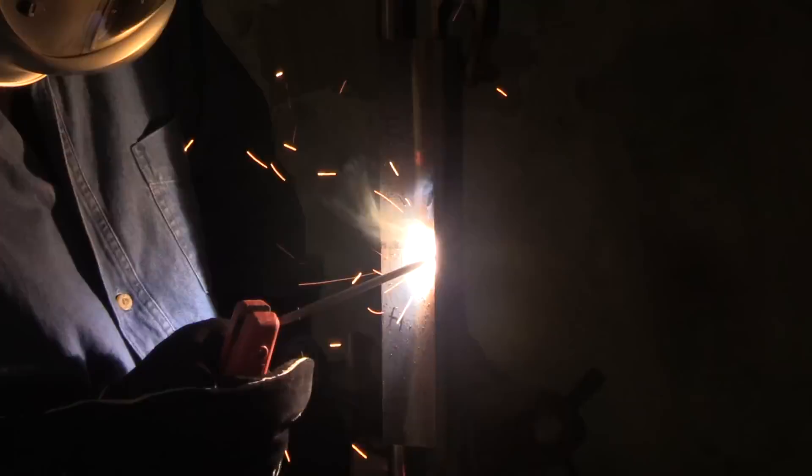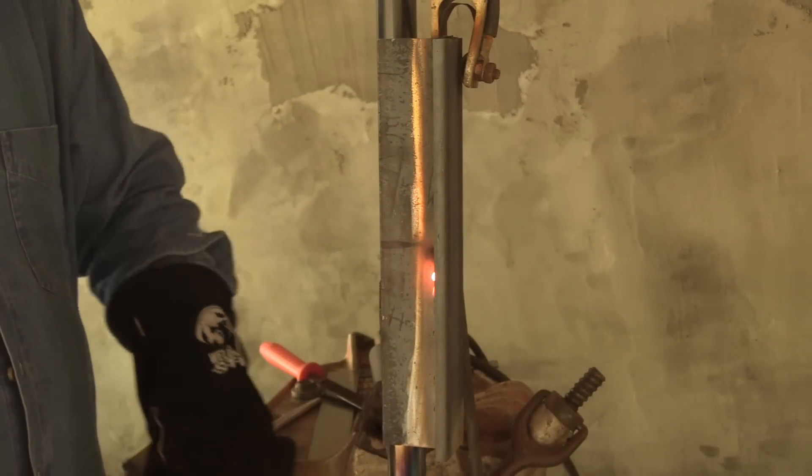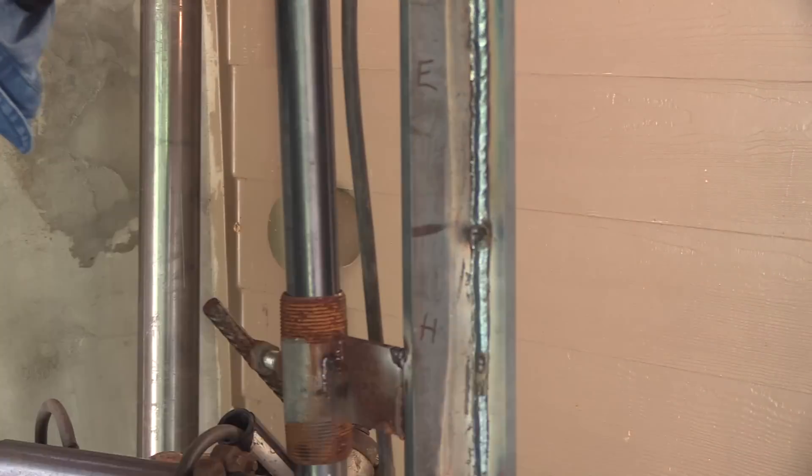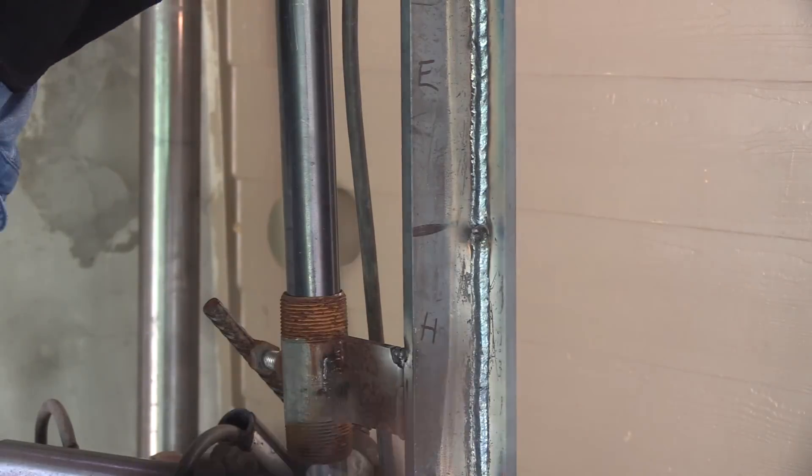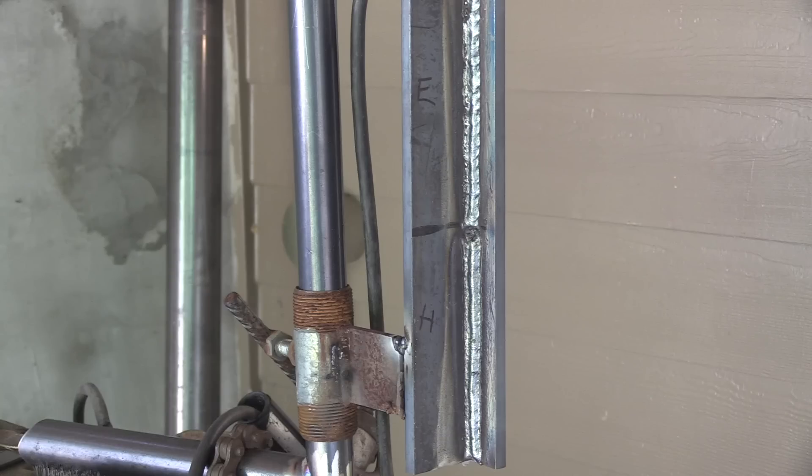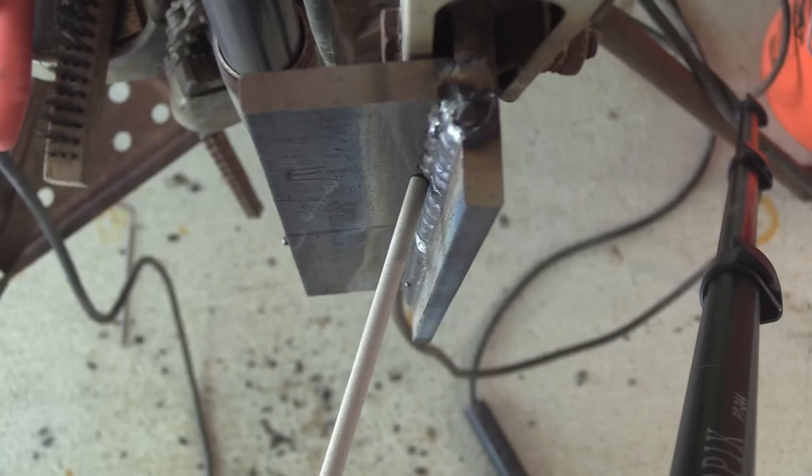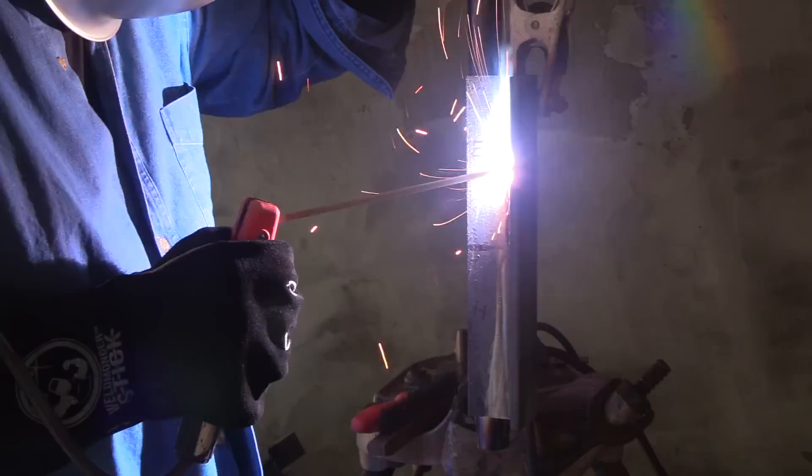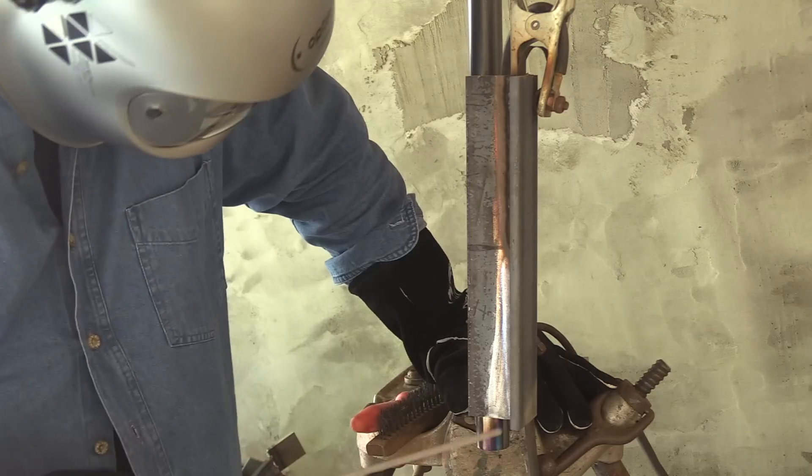So what I'm doing here, just because I'm in practice mode, I ran the first bead, the root pass. I'm running two over top of that, and then I'm going to run three over top of that. Not because it needs that much for this thickness, but I'm just practicing. Now I'm going to shift gears and go to this rod angle, favoring that left hand side. Once again, that helps to prevent undercut.